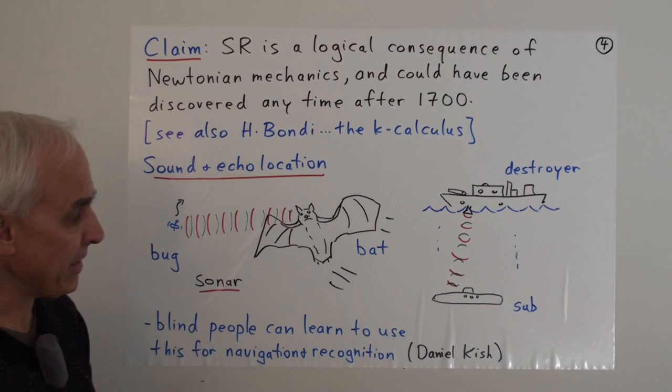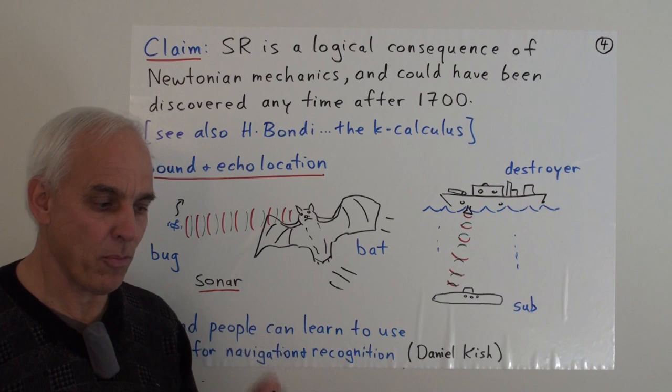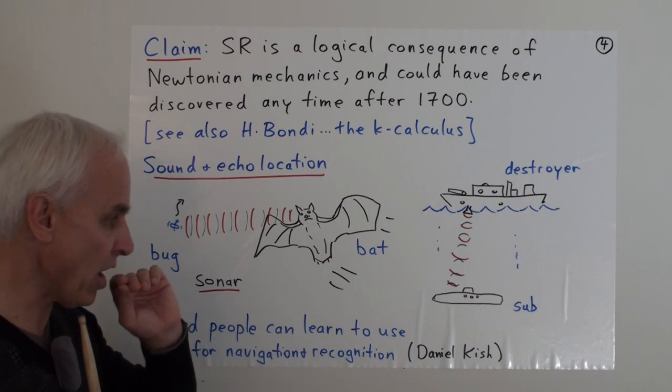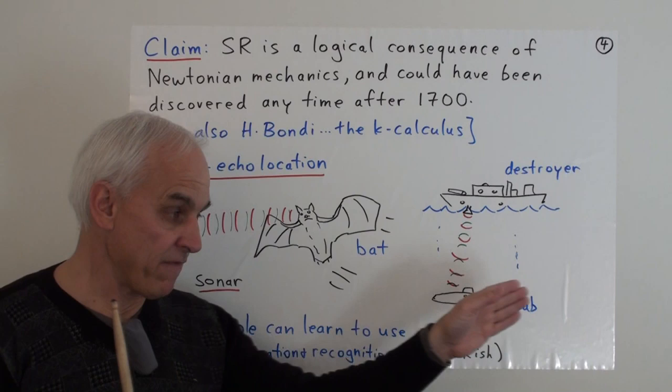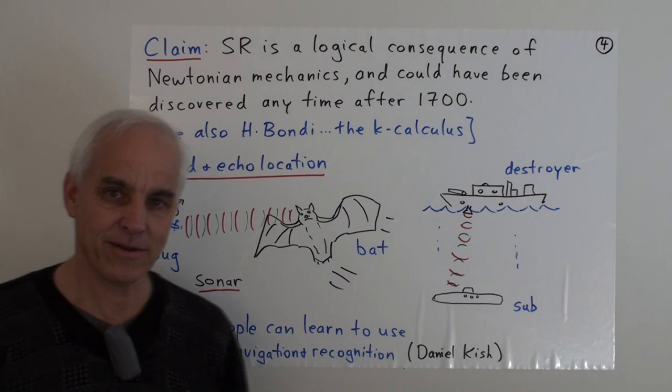Of course, sonar is also involved in military things. So, if you have a destroyer and it's looking for an enemy submarine, then one way of doing that is to send little pings into the water and hope that it knocks off the metal hull and comes back and alerts you to the presence of something down there. So, this idea of bouncing sound off something to identify how far away it is, maybe to figure out how fast it's moving, in fact, can actually be also taught to people. So, it turns out that blind people can learn to use echolocation for navigation and recognition.